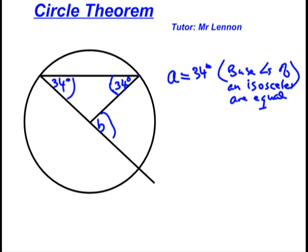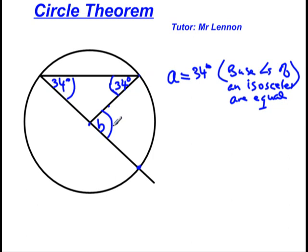Notice something here about angle B. Angle B is actually at the center of the circle. What we have here is an arc — any part of the circumference is called an arc. It's like a bend — we're driving around the bend, but it's part of a circle. The angle that the arc subtends to the center is referred to as a central angle. The angle at the center is twice the angle at the circumference that is standing on the same arc.